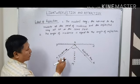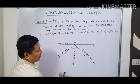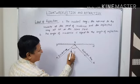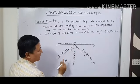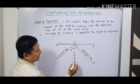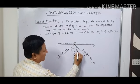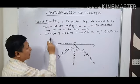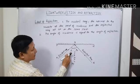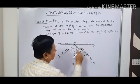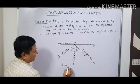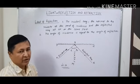Now we should know what is angle of incidence and angle of reflection. The angle between the incident ray and the normal is known as the angle of incidence, denoted by i. The angle between the reflected ray and the normal is known as the angle of reflection, denoted by r. The second law states that the angle of incidence is equal to the angle of reflection, that is i = r.